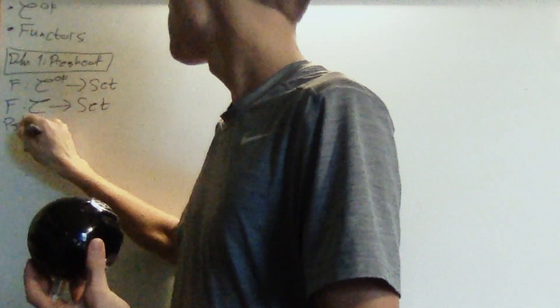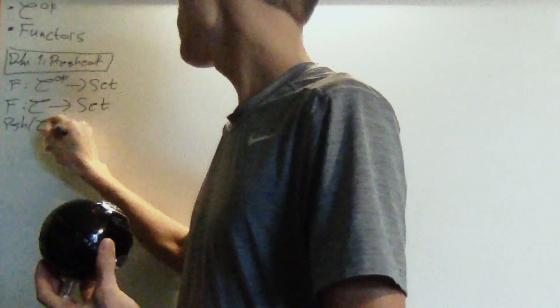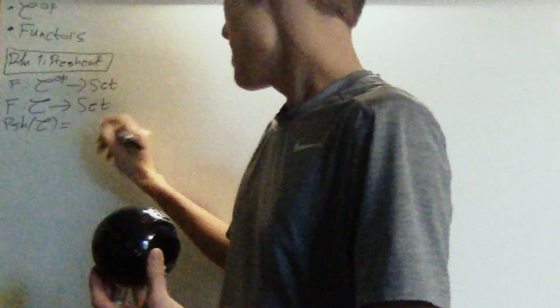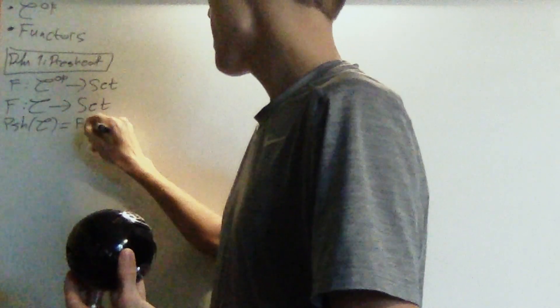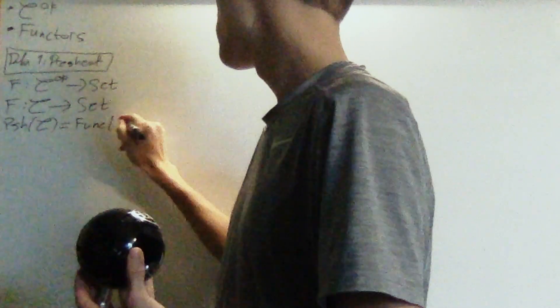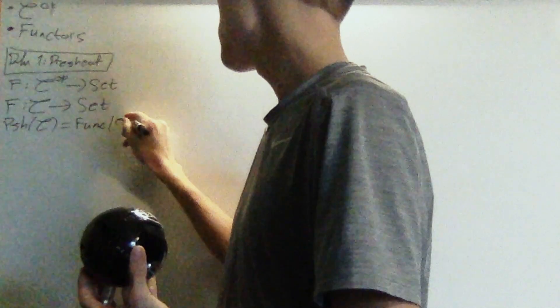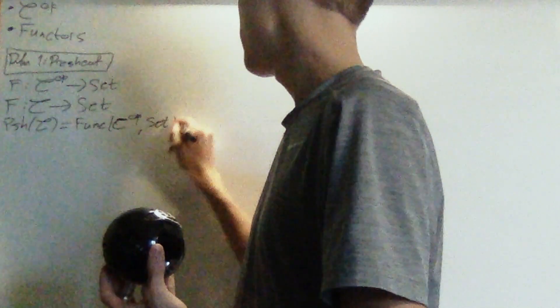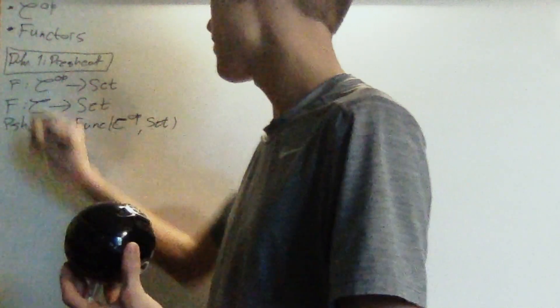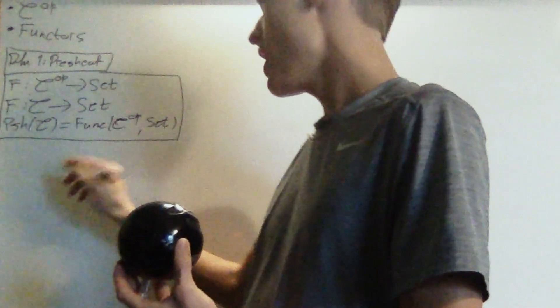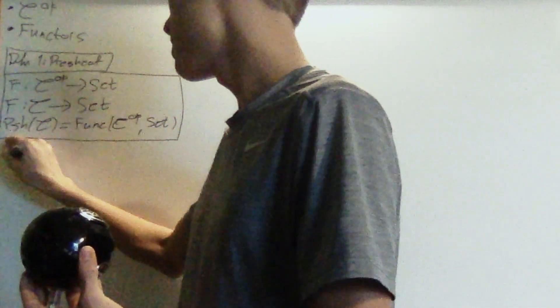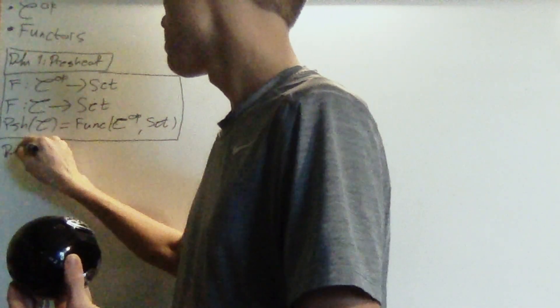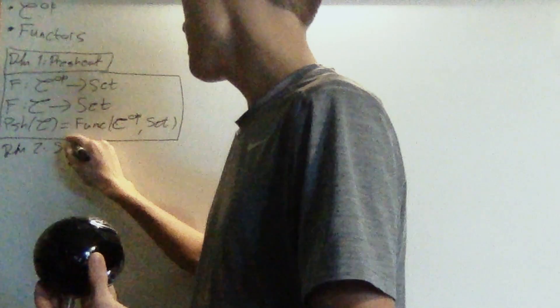The category of pre-sheaves is quite trivially, from this definition, the functor category between the opposite category and the category of sets. That's literally the definition. The next definition is a little more complicated — it's of a site.